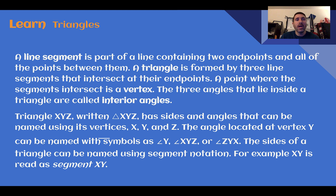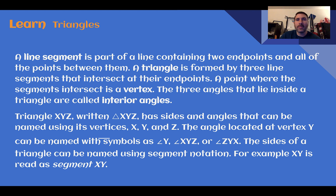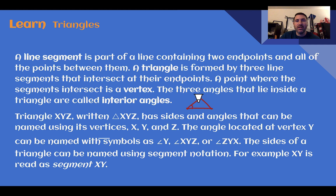Triangles. A line segment is part of a line containing two endpoints and all of the points between them. A triangle is formed by three line segments that intersect at their endpoints. A point where the segments intersect is called a vertex. The three angles that lie inside a triangle are called interior angles.